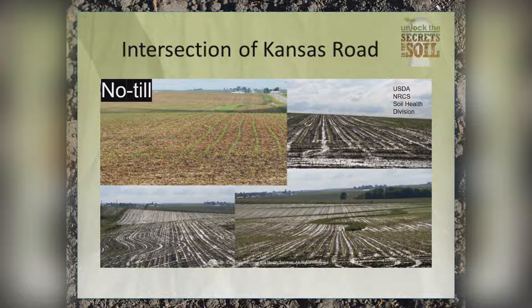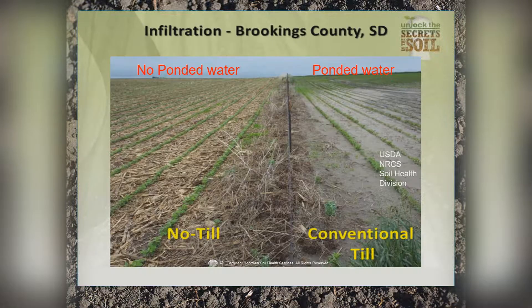This happens all over the United States. Four pictures taken at a Kansas road intersection show a no-till field in the upper left, with standing water in all three surrounding tilled fields from the same rainfall event. In Brookings County, South Dakota, a long-term no-till field on the left has no ponded water, while the right shows ponded water in a conventionally tilled field — and you can almost see an elevation difference at the fence row. We've lost anywhere from 50% to 80% of our original soil organic matter from our soils, and that's causing a problem with compaction.